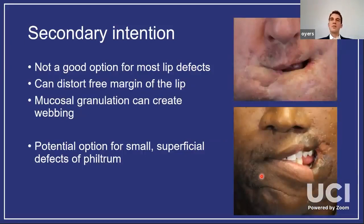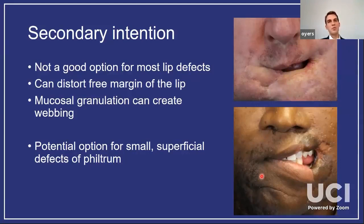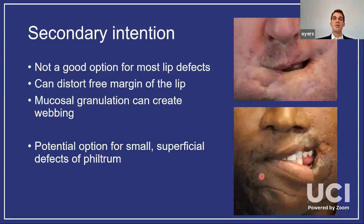Secondary intention is really not a great option for most lip defects. It will pull the free margin, create webbing, and shorten the height of the lips — and once you've done that, it's very difficult to undo. Maybe a small superficial defect in the philtrum — a concave subunit — could consider a little secondary intention, but in general I would stay away from it for most lip defects.